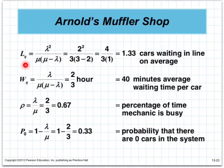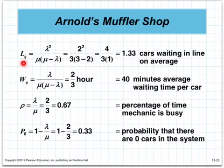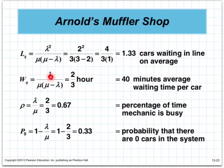The next calculation is LQ — the number of customers waiting in the queue on average. L is always a number, not time, and here we're concerned with only the queue. WQ is always time — specifically, the time spent waiting in the queue. And the formula for WQ is lambda over mu minus lambda times mu, which gives a fraction of 2 over 3 hours.